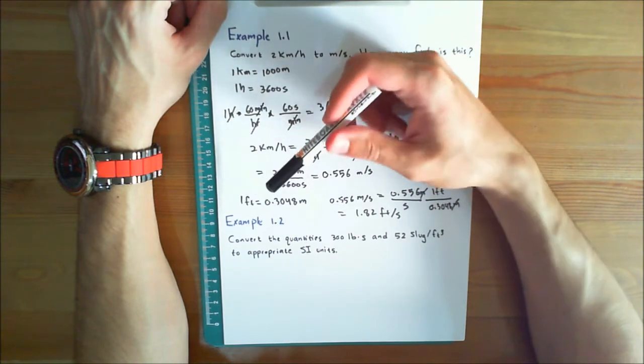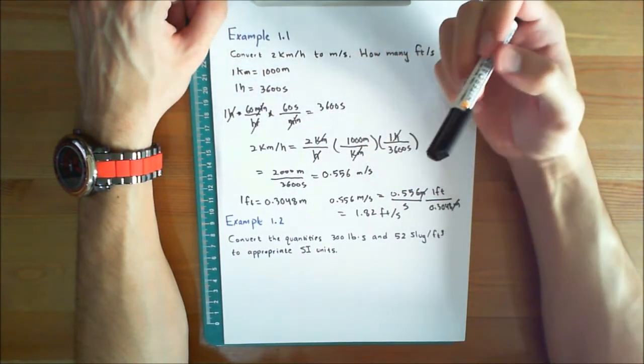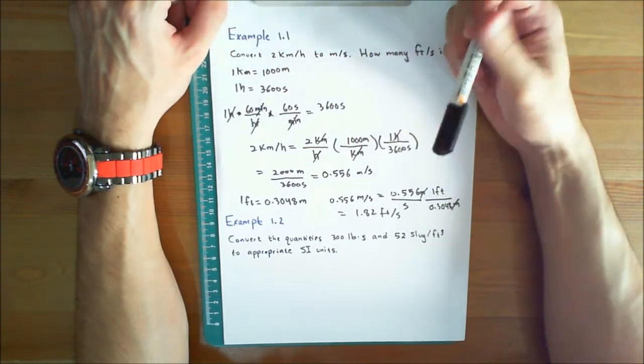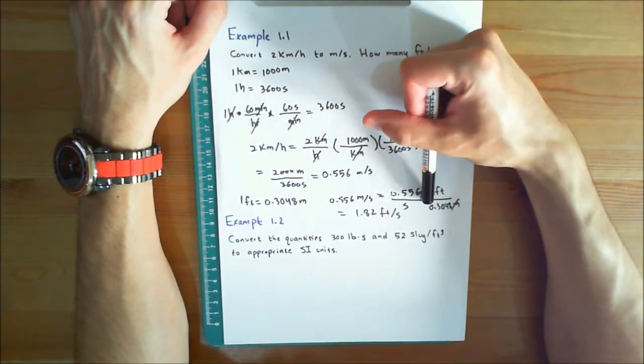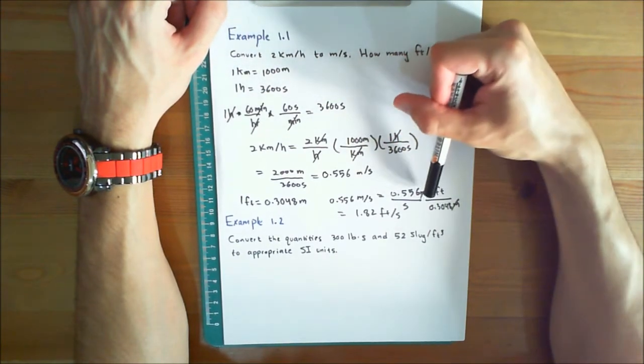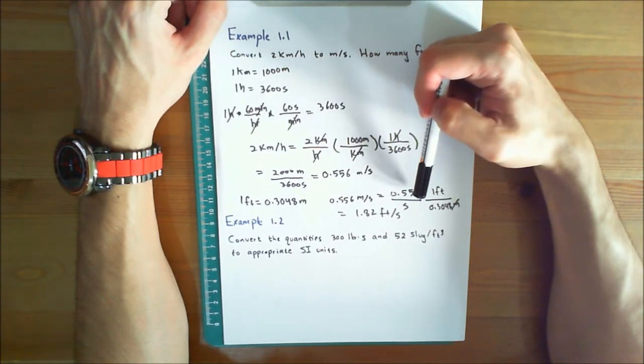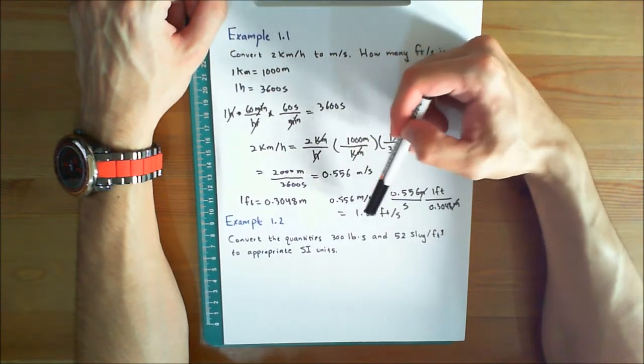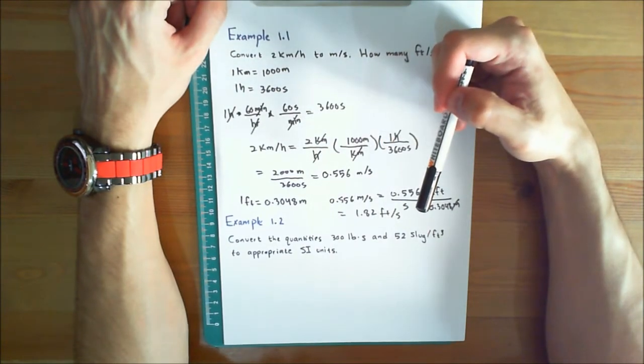One foot is equal to 0.3048 meters. So this means that 0.556 meters per second is equal to 0.556 meters per second, write them on top of each other, times 1 foot is equal to 0.3048 and now you're going to be able to cancel out the units. This would give you 0.556 divided by 0.3048 and the answer is going to be 1.82 feet per second. This answer, again, is rounded off to 3 significant figures.